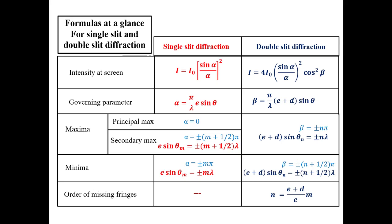As we did in our previous lecture, we start this discussion also from the review of formulas. The intensity at the screen due to single slit diffraction is I equal to I₀ sin²α / α², where I₀ is the incident intensity and α is given by its expression. The intensity at the screen due to double slit diffraction is I equal to 4I₀ sin²α / α² times cos²β, where β is given by its expression.